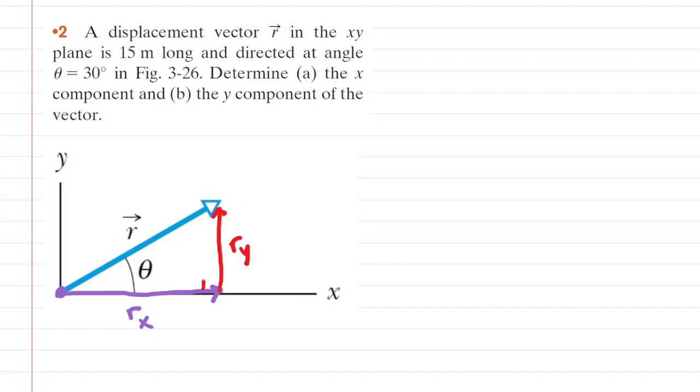Now we have a right triangle, and we can use basic trigonometry to solve for these components. Looking at this right triangle, the cosine of the angle equals the side adjacent to the angle, which is r sub x, over the hypotenuse of the right triangle, which is r.